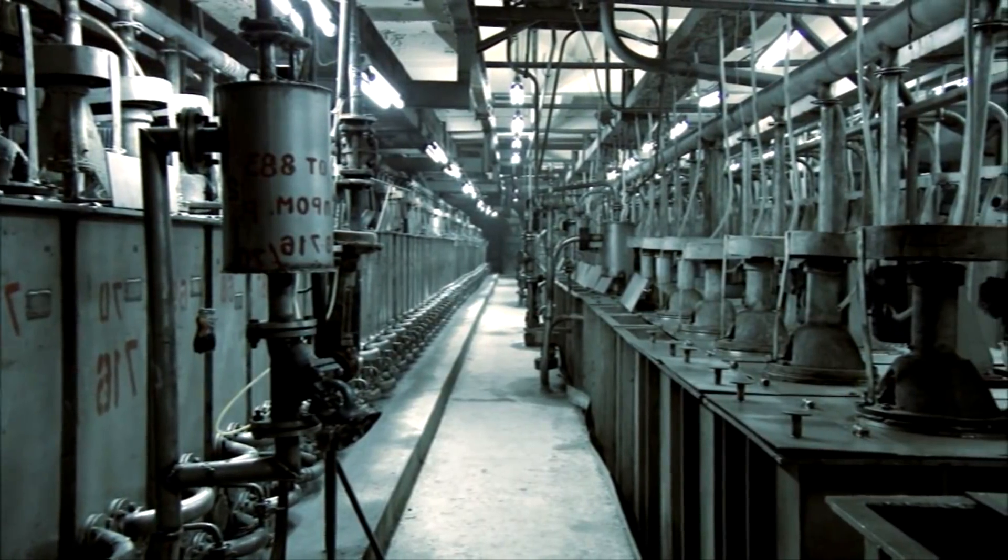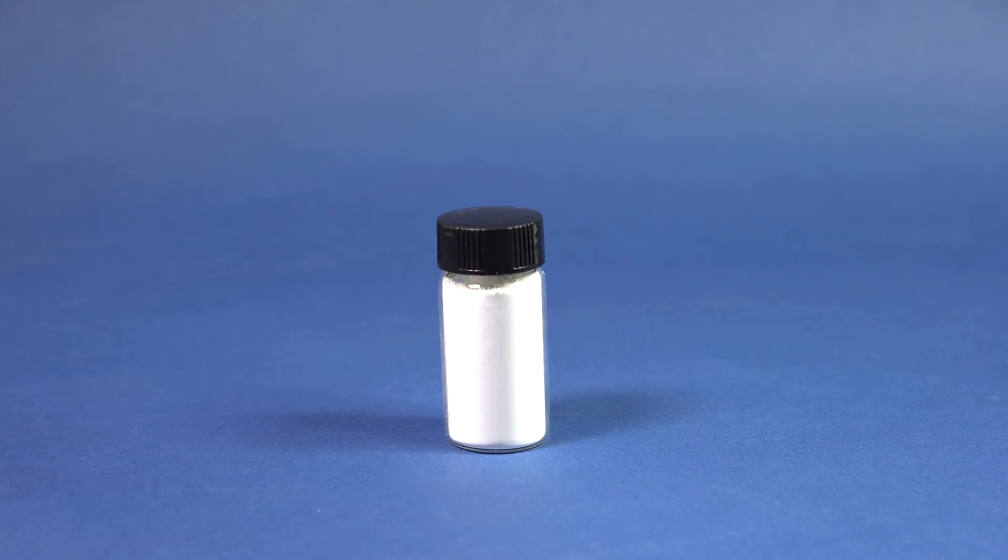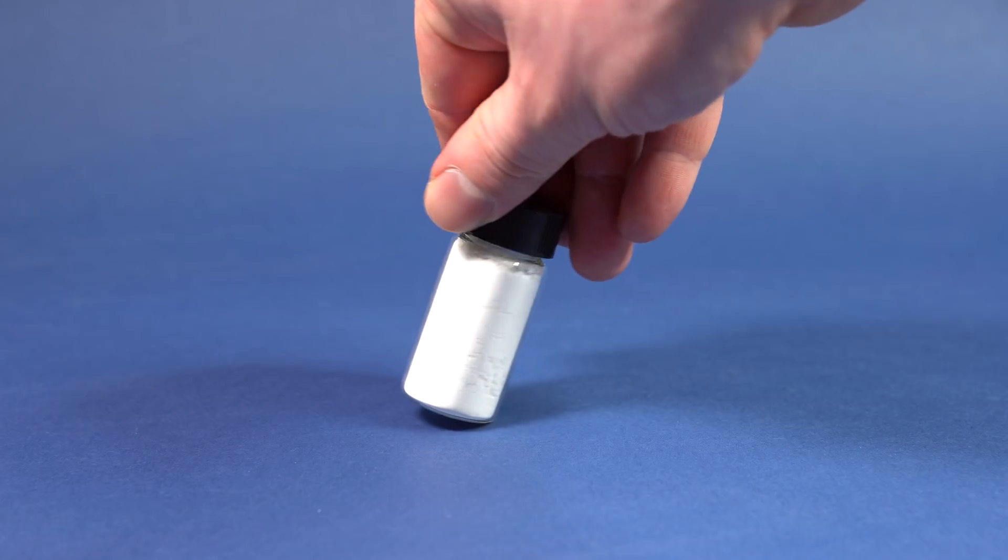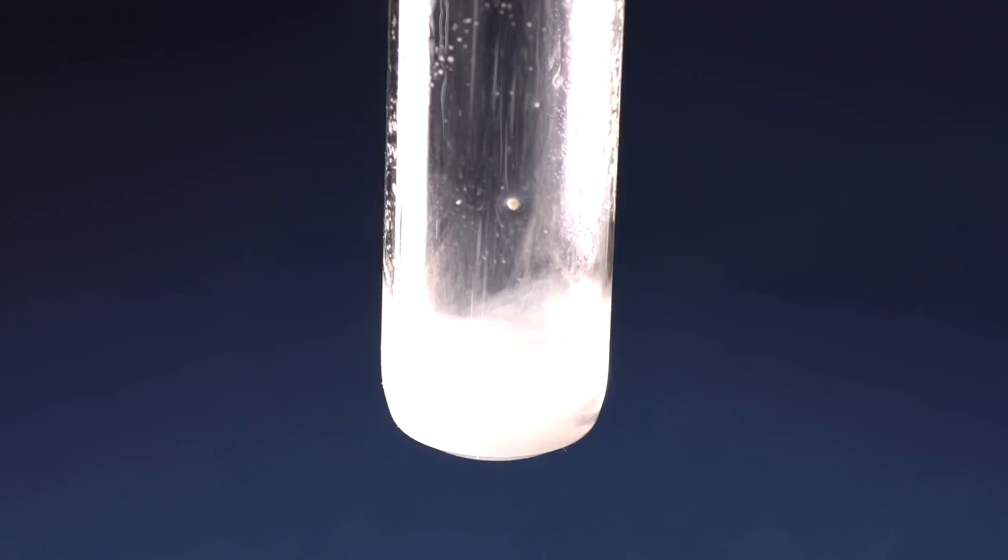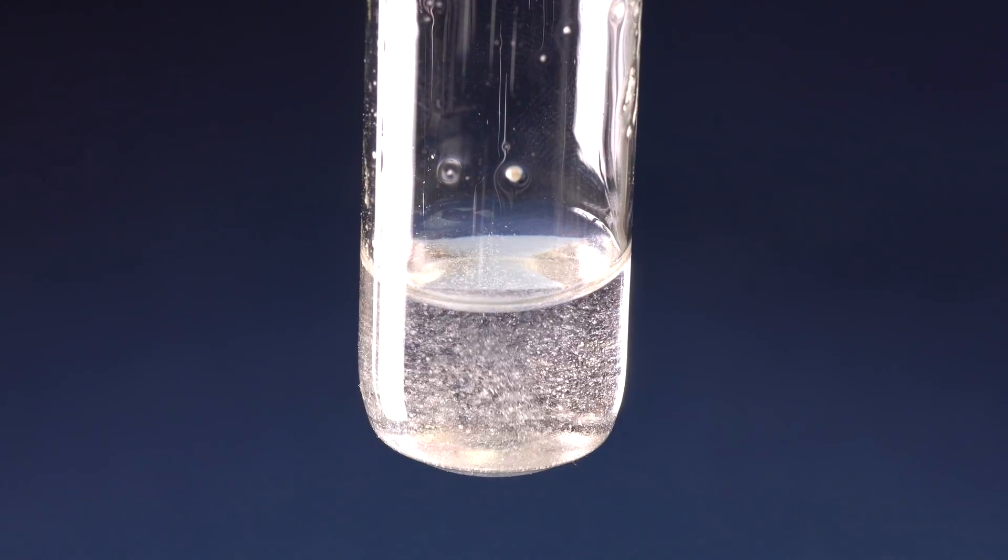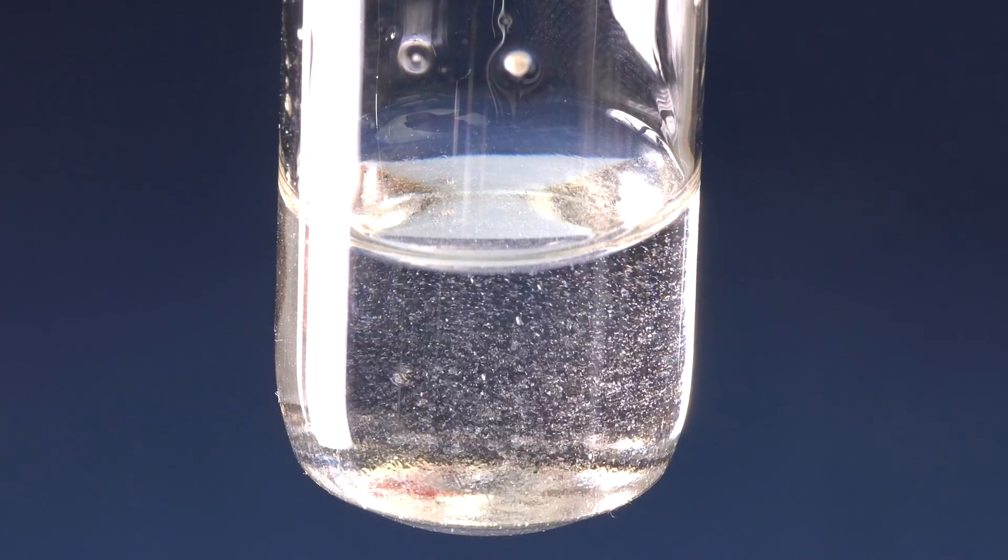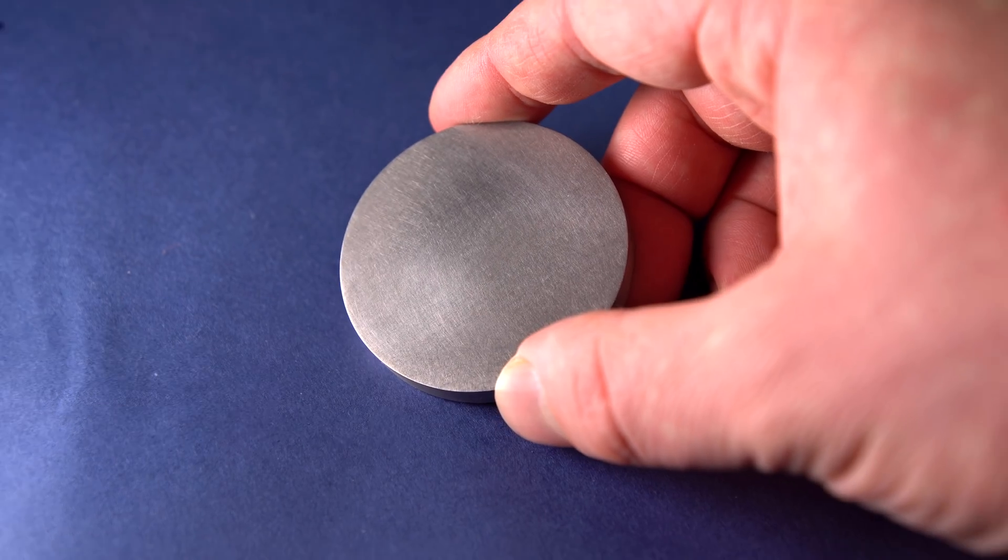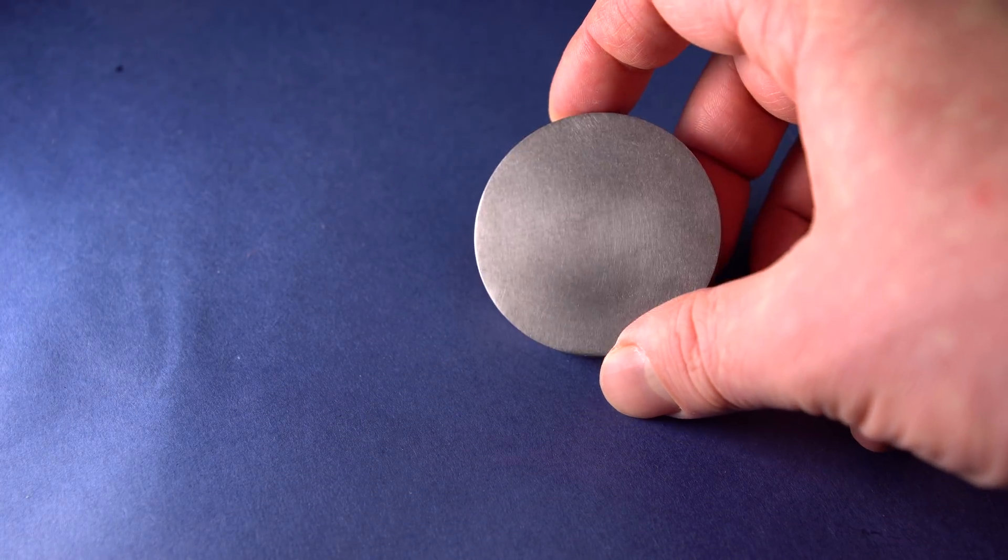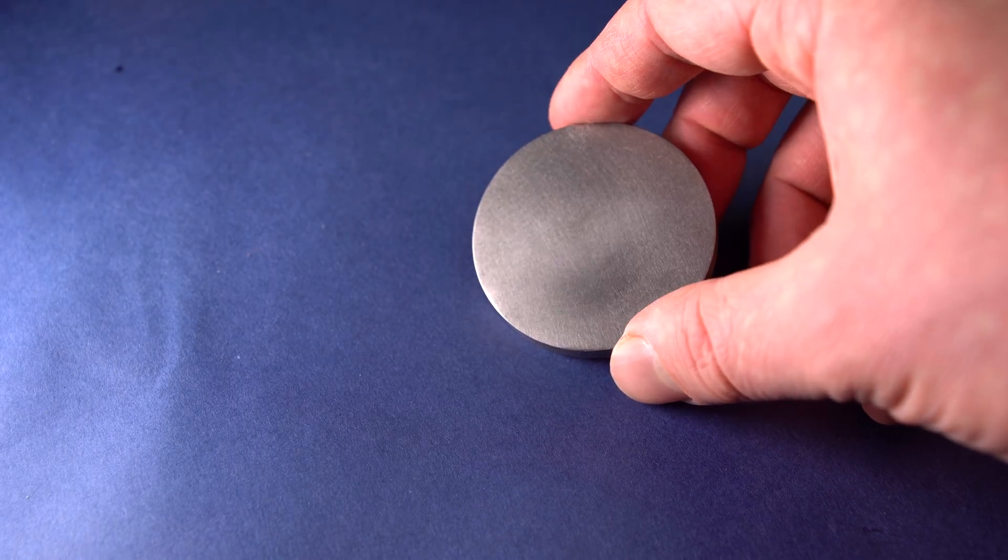Now, when obtaining niobium from ore it is purified from tantalum and other metals, and so pure niobium pentoxide is acquired, which is then dissolved in hydrofluoric acid, thereby obtaining complex niobium compounds, which are then reduced by metallic sodium to metallic state. After such a process, what is obtained is a high-purity niobium.